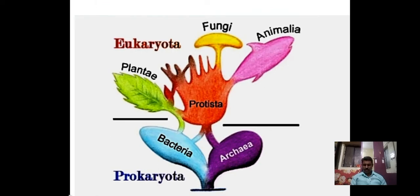The two-kingdom system of classification of organisms was introduced by Karl Linnaeus. The system recognized two kingdoms: Plantae and Animalia. However, this system was found inadequate for the classification of some organisms like bacteria, fungi, Euglena, etc. The scientist Haeckel suggested the third kingdom, Protista, to include these organisms.